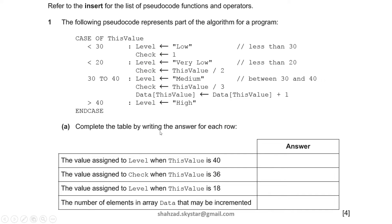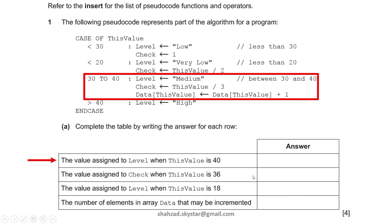First, they are telling me to complete the table by writing the answer for each row — the value assigned to level when this value is 40. If you provide input 40, it will first check: 40 is less than 30 — wrong. 40 is less than 20 — also wrong. Then 30 to 40 — this condition will be true. Once true, three statements execute: level gets 'medium', check gets this value divided by 3, and data of this value becomes data of this value plus 1. The answer will be 'medium' because level gets the value from medium.